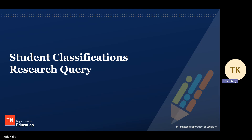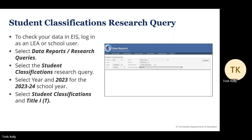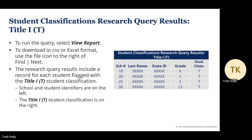Next, we'll discuss the two research queries used to check Title I data, starting with the Student Classifications Research Query. Log into EIS, the state's database, select Data Reports, Research Queries, and select the Student Classifications Research Query from the query list. Enter year as 2023 for the 23-24 school year, and select Student Classifications and Title I-T. To run the query, select View Report. To download in CSV or Excel format, use the file icon to the right of Find Next. Results include a record for each student flagged as Title I-T, with school and student identifiers on the left and the Title I-T student classification on the right.